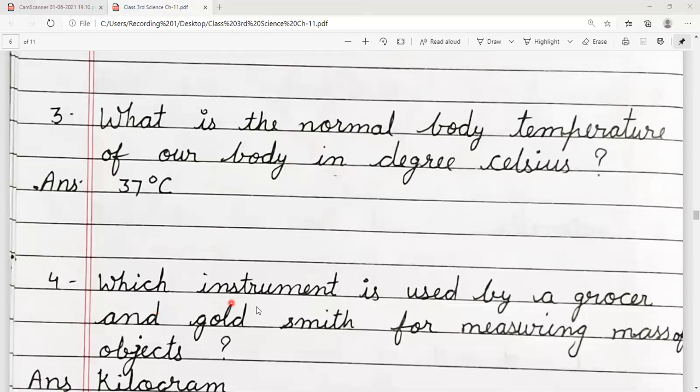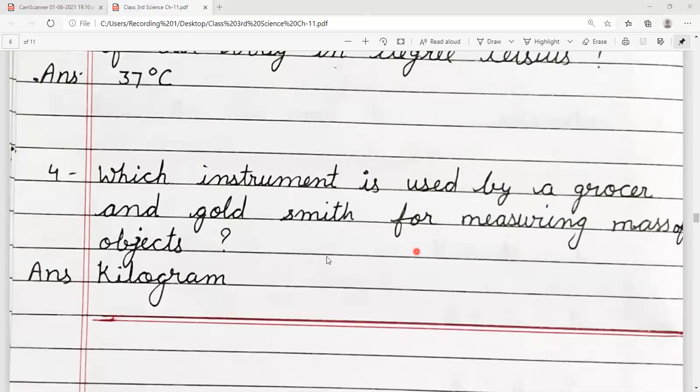Number four, which instrument is used by a grocer and goldsmith for measuring mass of object? Jab hum mass ko measure karte hain, toh kaunsa unit use karte hain? Kilogram. Kilogram humne smell likha, kyunki grocer and goldsmith question mein hai.